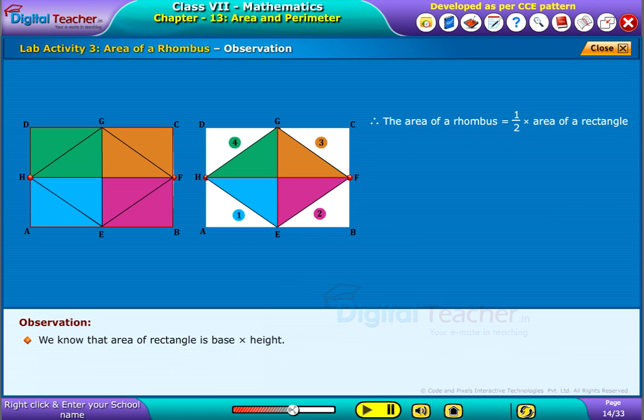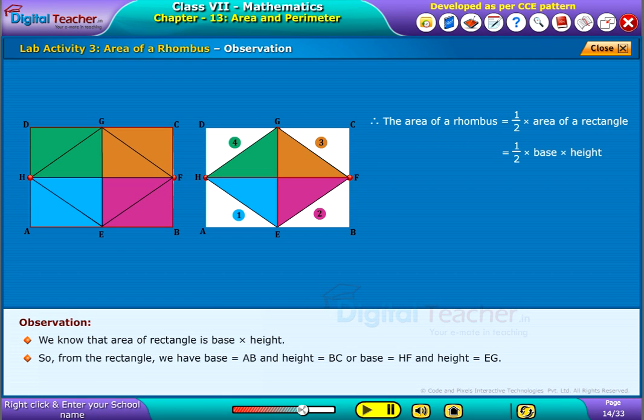We know that area of rectangle is base into height. So from the rectangle, we have base equal to AB and height equal to BC, or base equal to HF and height equal to EG.